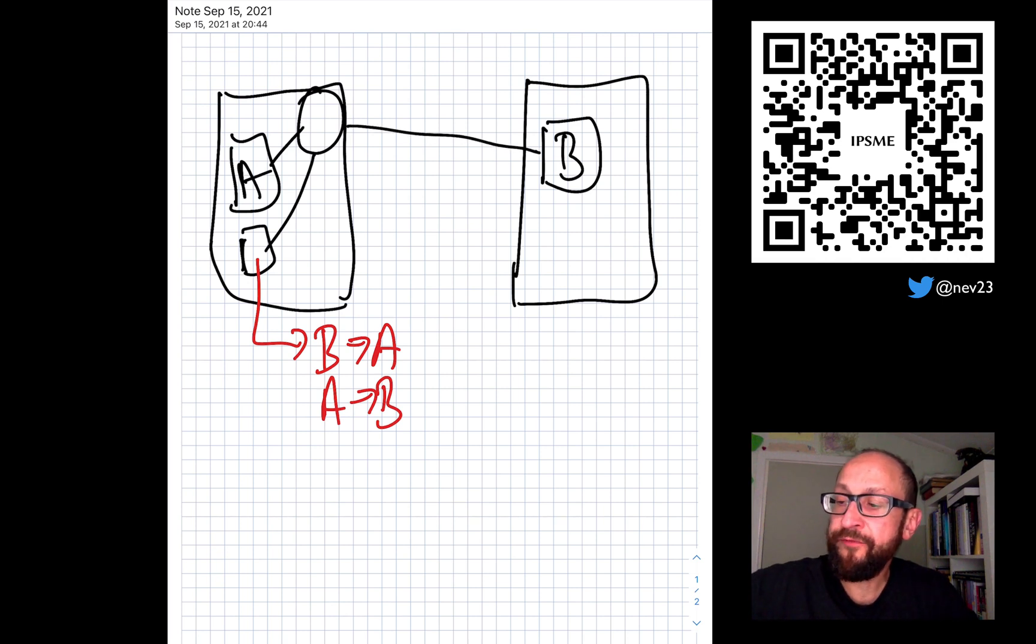So now if B updates to B prime, instead of taking down A and re-engineering A, then the translation object could be updated to support B prime.